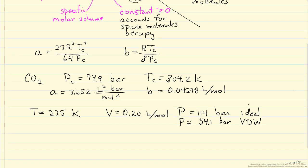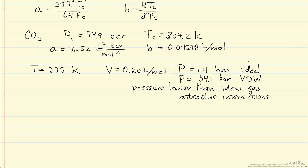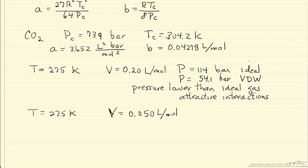Now let's keep the temperature at 275 Kelvin but look at the case where the volume is smaller. Notice that this volume is starting to get close to the B value, so we're trying to push the molecules very close together. We probably don't really consider this a gas, but we can still apply this non-ideal equation of state — this cubic equation, the Van der Waals equation.